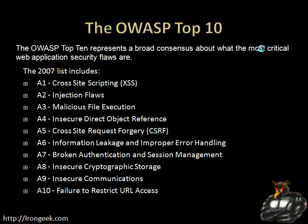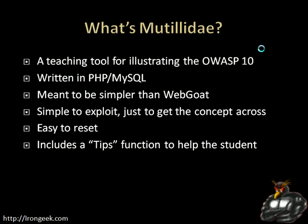Mutillidae is designed to be a teaching tool — something you can easily use to illustrate the OWASP Top 10 to people. I'm hoping to get people to use it in university classrooms. It's written in PHP and MySQL. One of the reasons I chose PHP is because it's fairly easy to learn, a lot of different platforms will work with it, and it's really easy to write vulnerabilities in it. Some people say PHP is inherently insecure — I'm not going to necessarily say that. It just lets developers shoot themselves in the foot a lot.